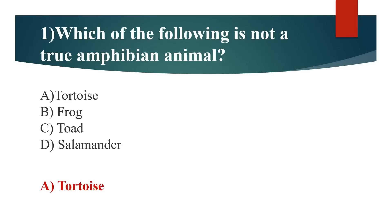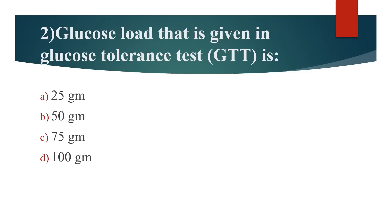Second question: Glucose load that is given in glucose tolerance test (GTT) is? Option A: 25 gram. Option B: 50 gram. Option C: 75 gram. Option D: 100 gram. Answer is Option C: 75 gram.